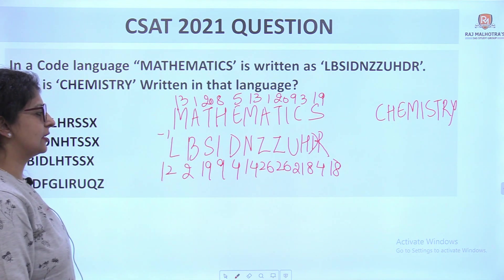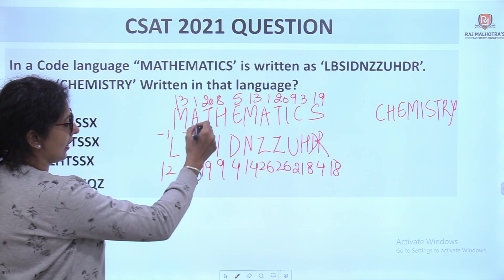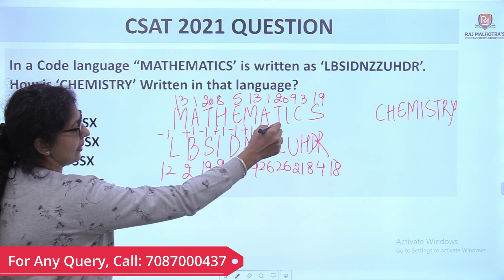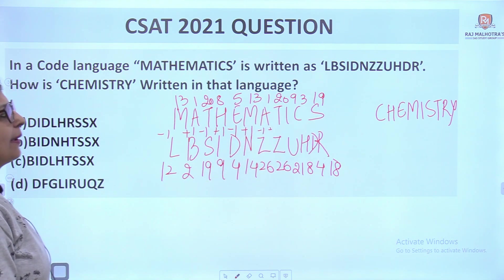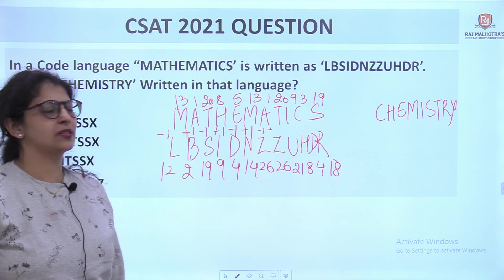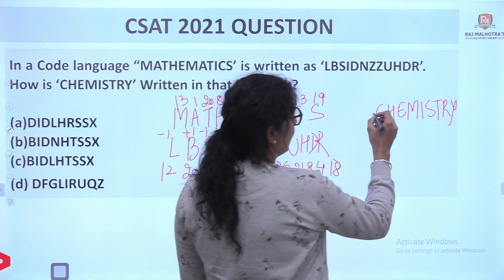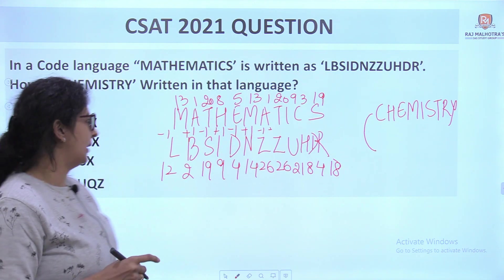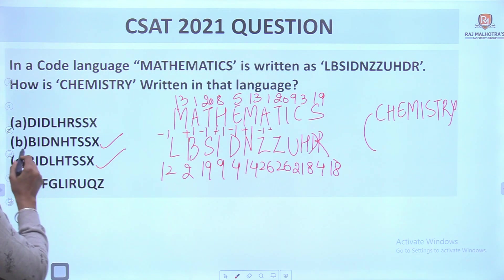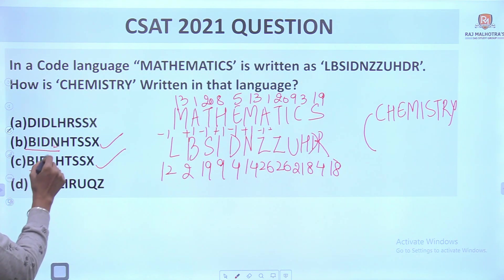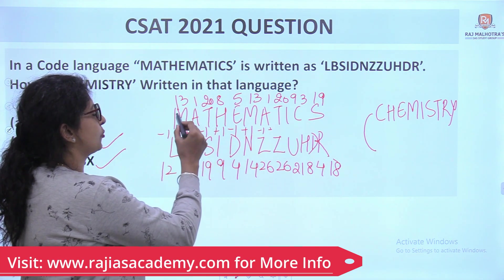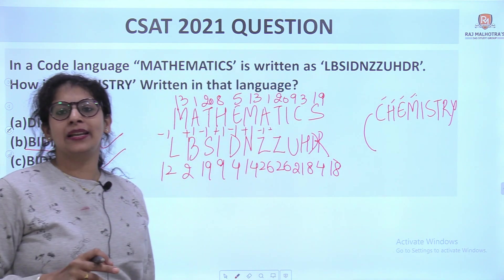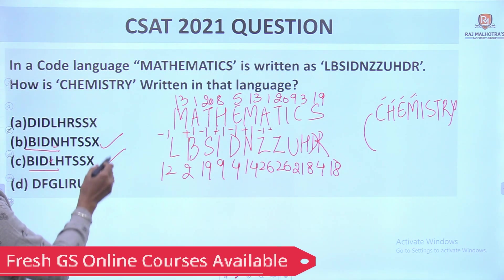Checking the pattern: 13→12 is minus 1, A→B is plus 1, then minus 1, minus 1, minus 1, plus 1, minus 1, minus 1, plus 1, plus 1, plus 1, plus 1. So the pattern is alternating minus 1 and plus 1. For 'chemistry,' C minus 1 gives B, so the answer starts with B — option B or C. Checking the 4th letter: H(8) + 1 = 9 which is N(14)... M+1=14=N. So the answer is Option B.